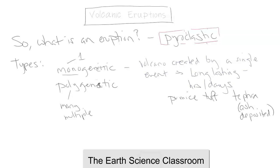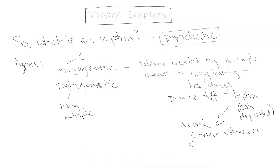These can accumulate over the long-lasting eruption and form scoria or cinder volcanoes. As mentioned in the cinders video, cinders are generally smaller than 300 meters in elevation, and they usually form on the site of larger stratovolcanoes based on the eruptions.